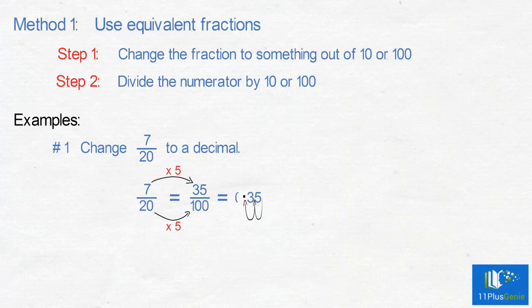which gives us 0.35. 7 twentieths equals 0.35. Number 2: Change 13 fortieths to a decimal. In this example, we can change 40 directly into 10 by dividing by 4.